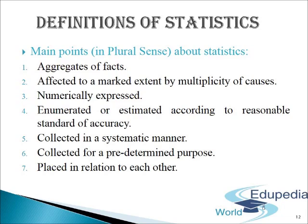For example, '9 failed out of 100 students' is a statistical statement expressed numerically. Fourth point: statistics are enumerated or estimated according to a reasonable standard of accuracy. Enumeration means a precise and accurate numerical statement, but sometimes where the area of statistical inquiry is large, accurate enumeration may not be possible. In such cases, experts make estimation on the basis of whatever data is available. Fifth point: statistics are collected in a systematic manner; statistics collected without any order and system are unreliable and inaccurate.